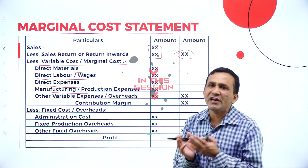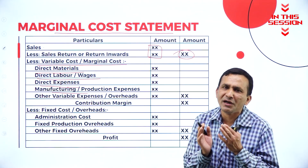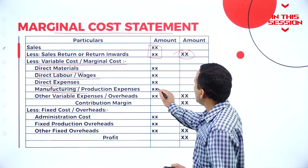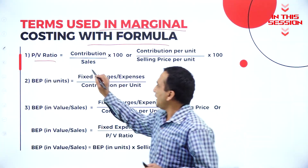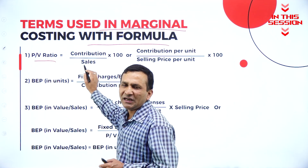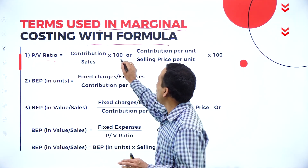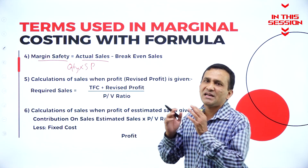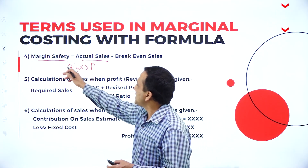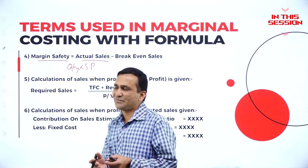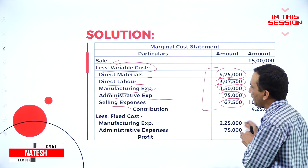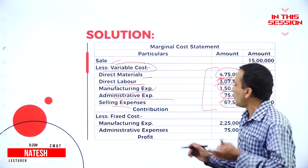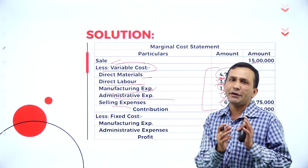Manufacturing or production-related variable items or variable expenses need to be considered here. The PV ratio formula is contribution divided by sales, multiplied by 100. If you subtract actual sales minus breakeven sales, you can easily find out the margin of safety. If the value basis is given, we consider value. If the cost per unit is given, we write contribution per unit.